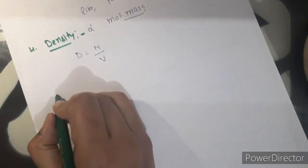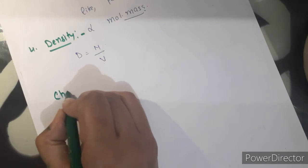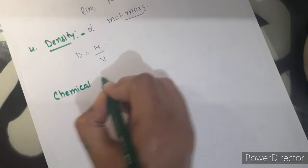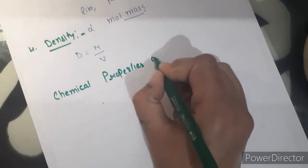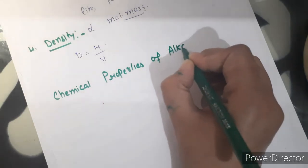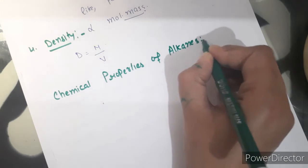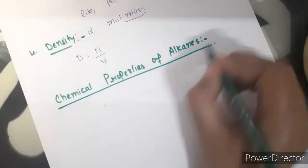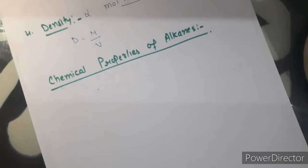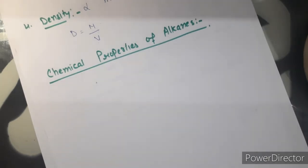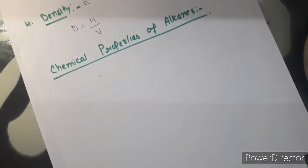Next are the chemical properties of alkane. Alkanes give substitution, isomerization, oxidation, pyrolysis, and aromatization reactions. Let's discuss all these types of reactions one by one.